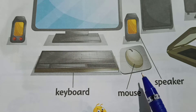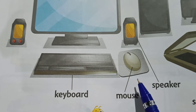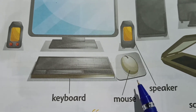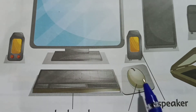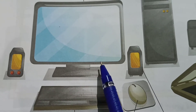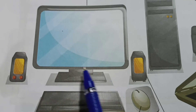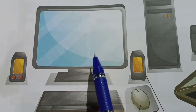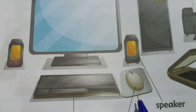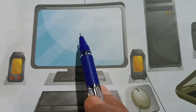Now what is this, children? It is a mouse. When you point at things, it points on the screen. You can draw pictures using the mouse.